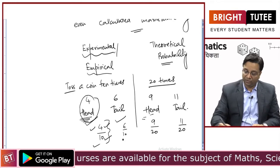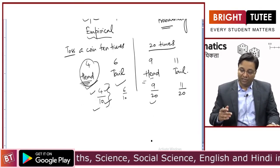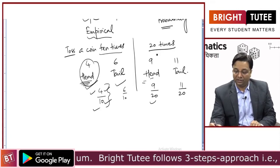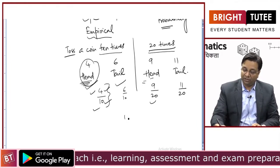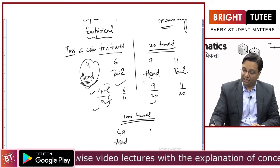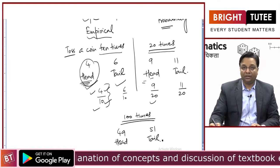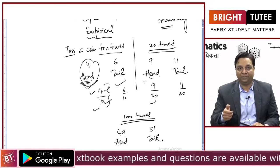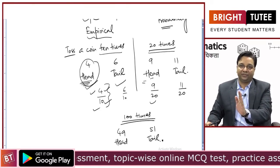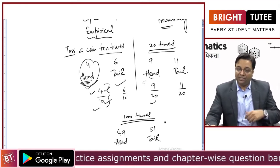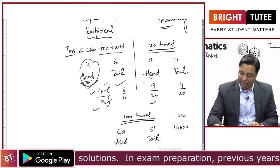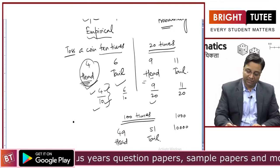Why are they different? Because these are two different students in two different situations — this student tossed 10 times, this student tossed 20 times. If another student tosses the coin 100 times, they might get 49 times heads and 51 times tail. Now, as you increase the number of times you perform this experiment, the possible results are either head or tail. Out of those possible results, if you increase the number of times — say 1000 or 10,000 times — you will observe that the chances are coming closer to half, closer to 1/2.